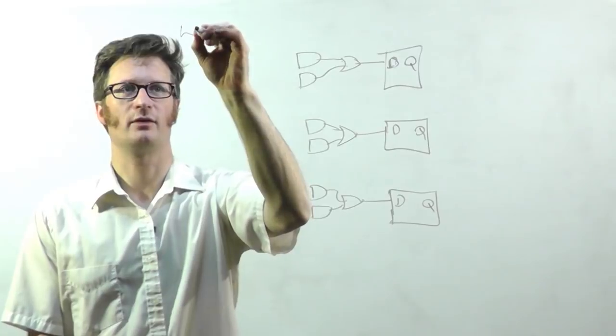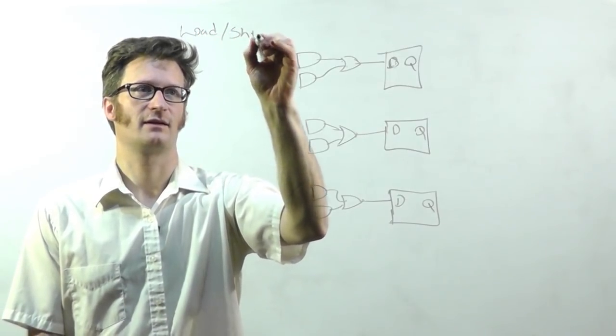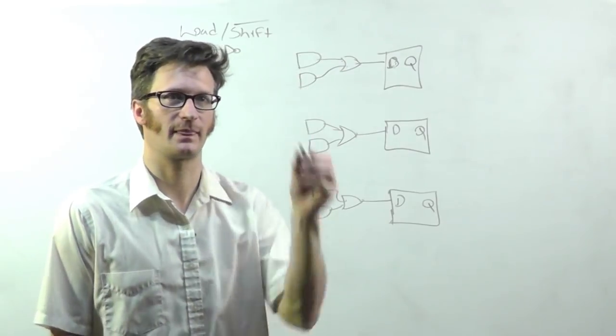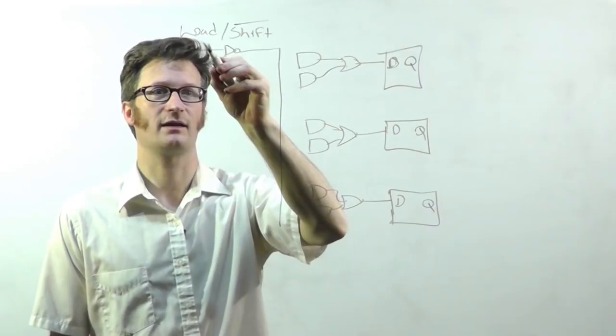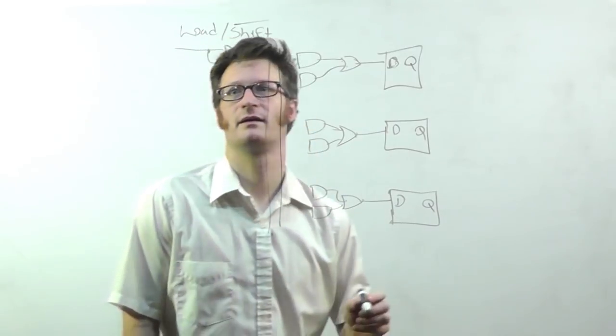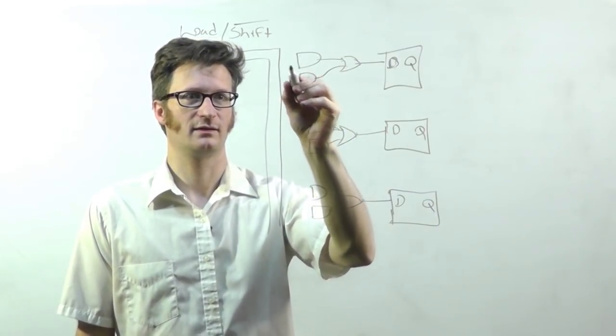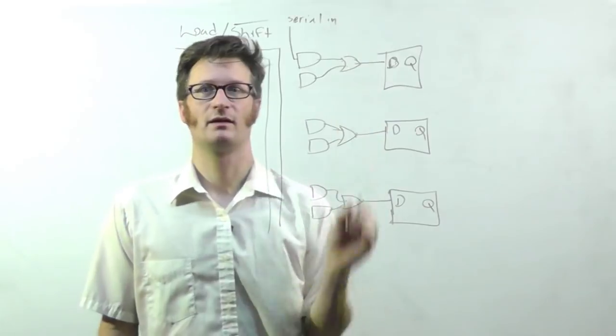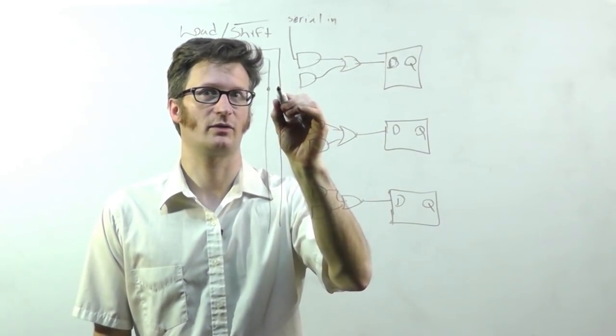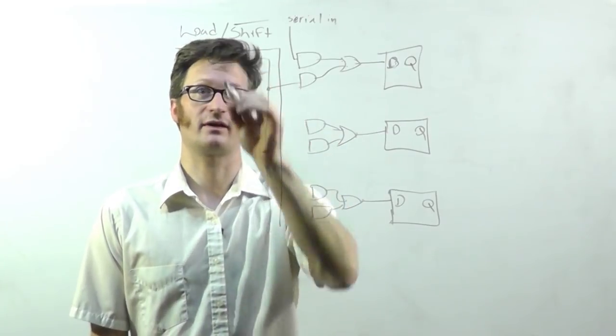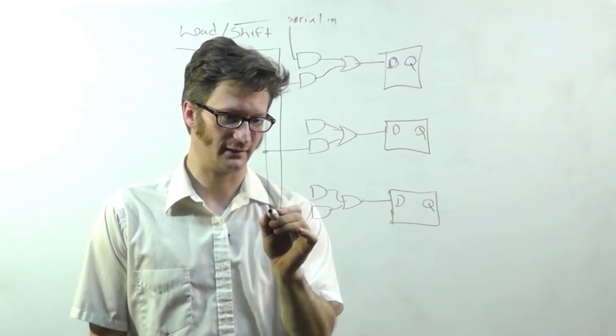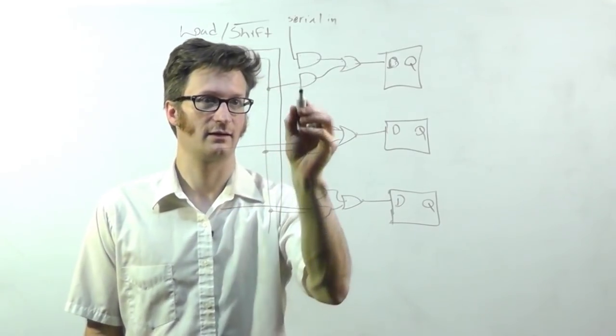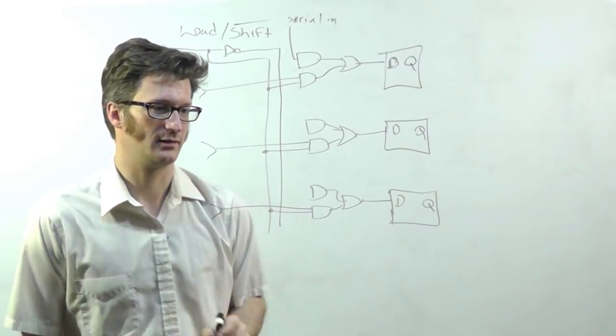Okay, so here is my load/shift input. And I have a little inverter. And that will come down here like that. This one will come like that. So when I want to load data, this will be my serial in. When I want to load data, I'm going to have this high. And that's going to select this AND gate, the lower AND gate of each of these groups. And in here is the inputs that I put my data on.